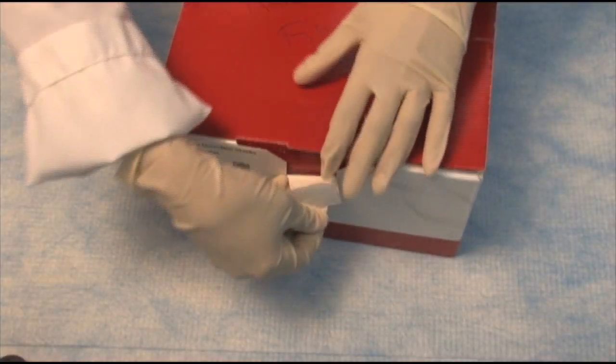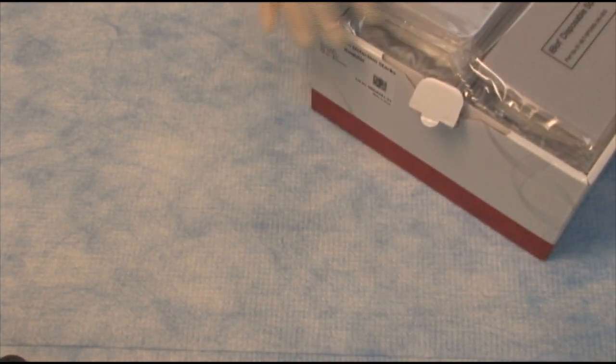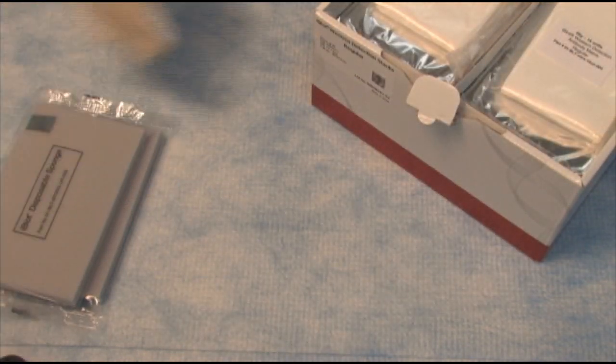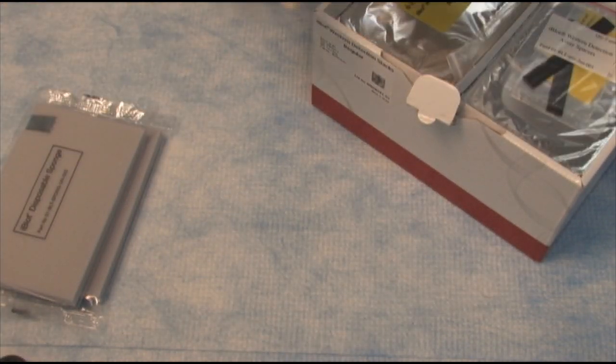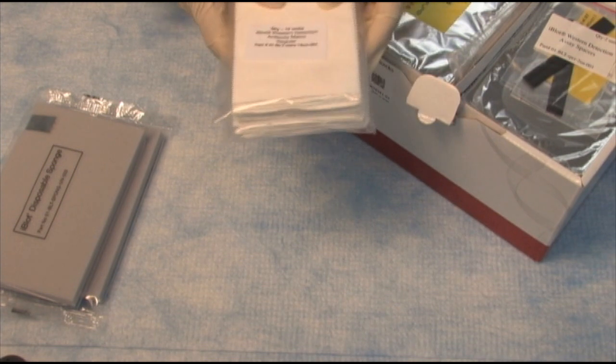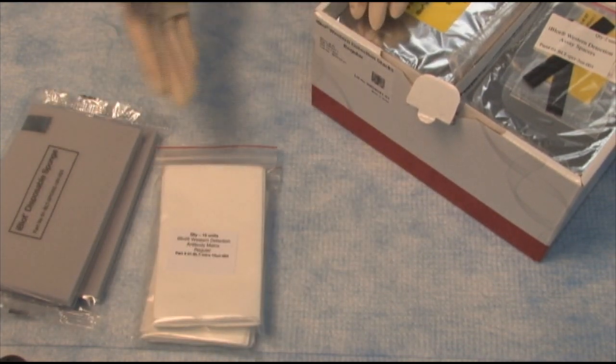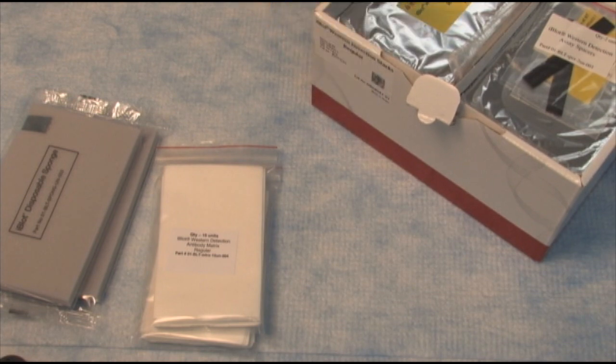Now let's see what we get in the box for the iBlot Western detection stacks. We have some sponges here. These go into the lid of the iBlot device. We have some matrices. And these are what are used to put your different solutions on, your antibody, your blocking solution, and so on.